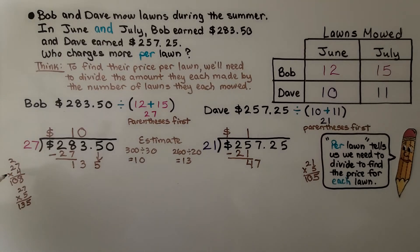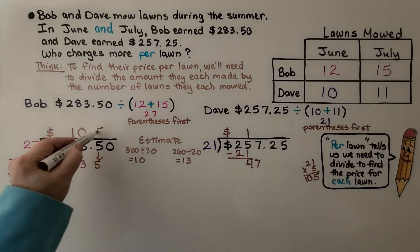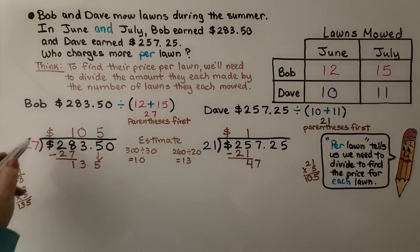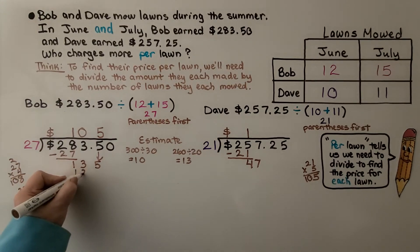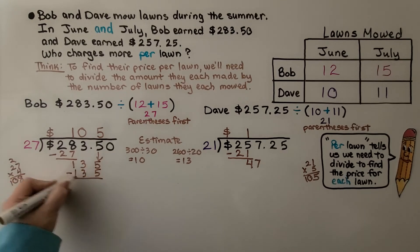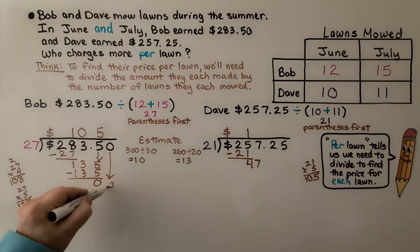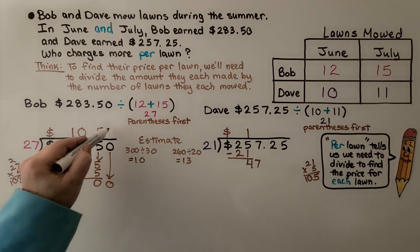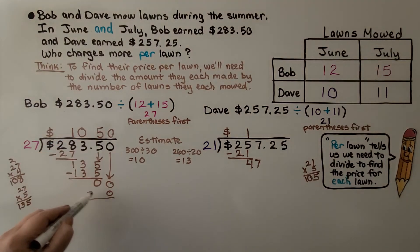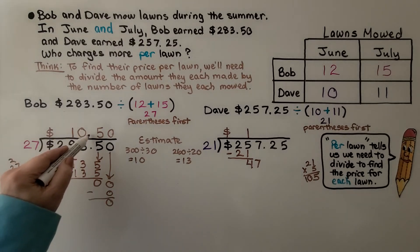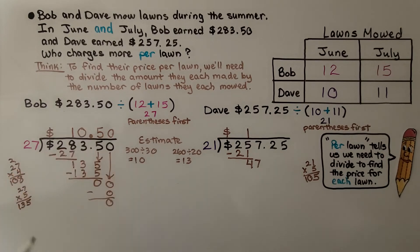How many times can 27 fit into 135? Well, we can guess and say 4 times. That's 108 when we do multiplication on the side. When I try 5 times, it is 135. So now we know it's 5. And 27 times 5 is 135. We subtract, we get a 0. How many times can 27, because this 0 is going to come down, how many times can 27 fit into 0? 0. So now we have another 0 that we can technically subtract to get a 0 remainder. Our decimal point, because that's a whole number, is going to go straight up into the quotient. We know Bob charged $10.50 for each lawn.